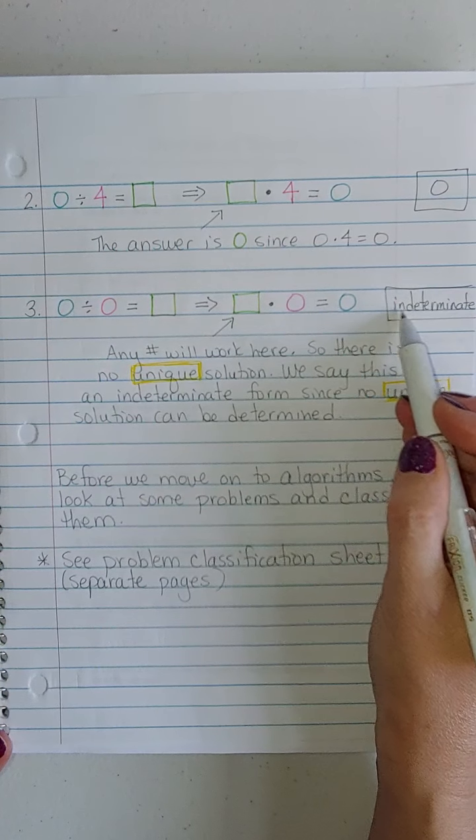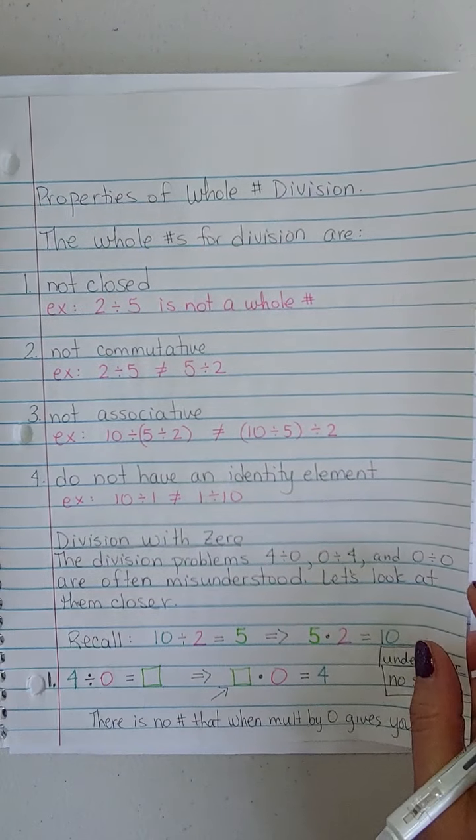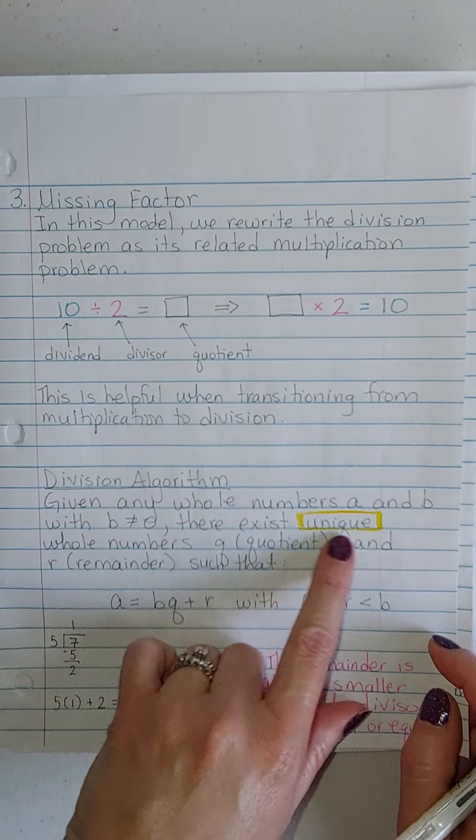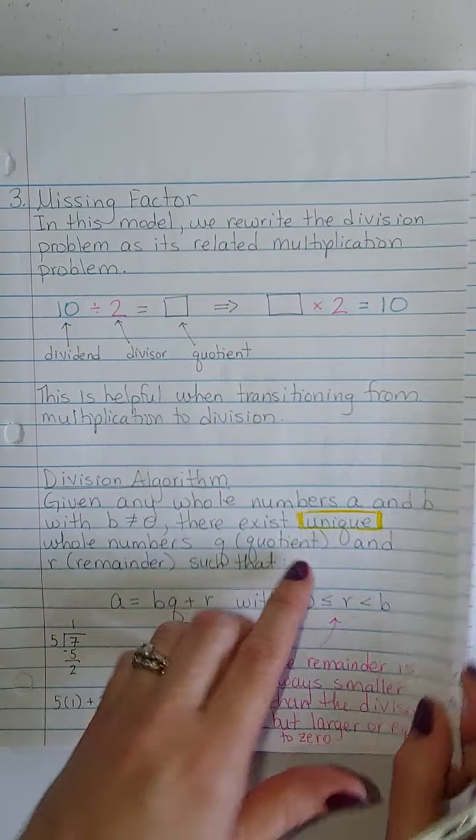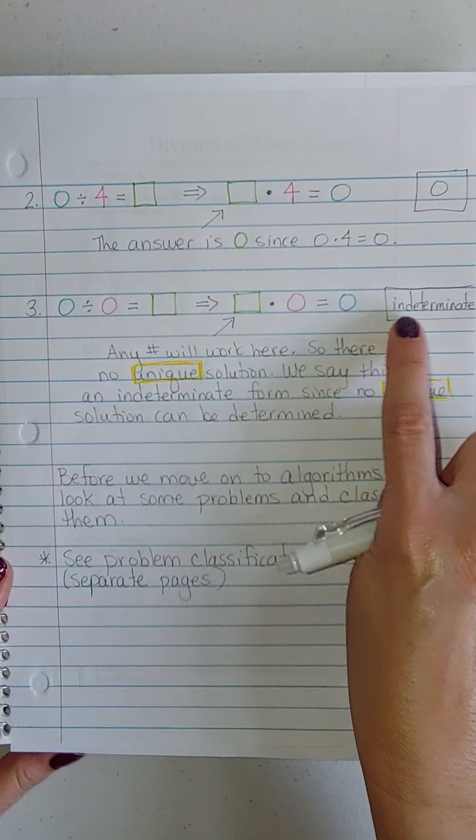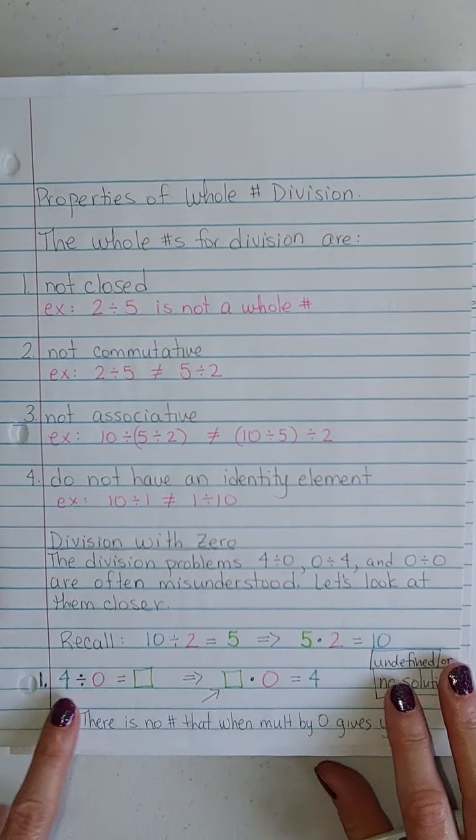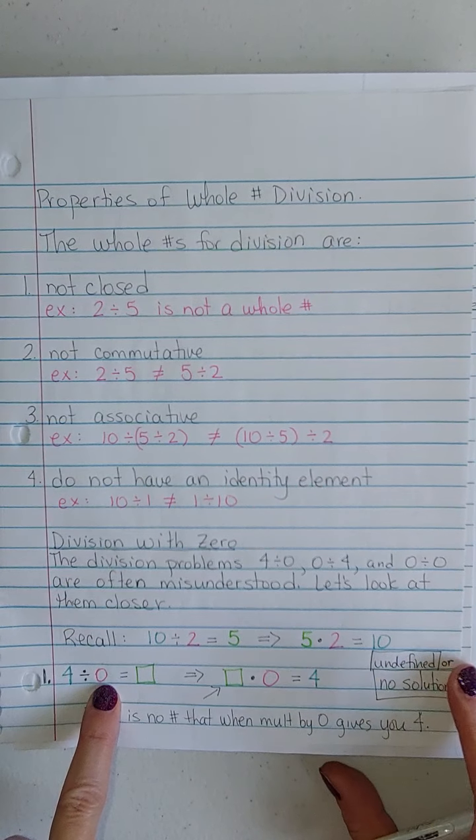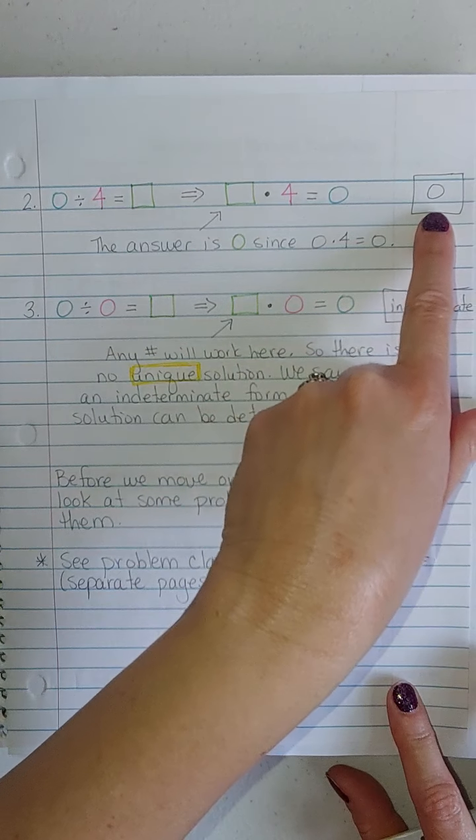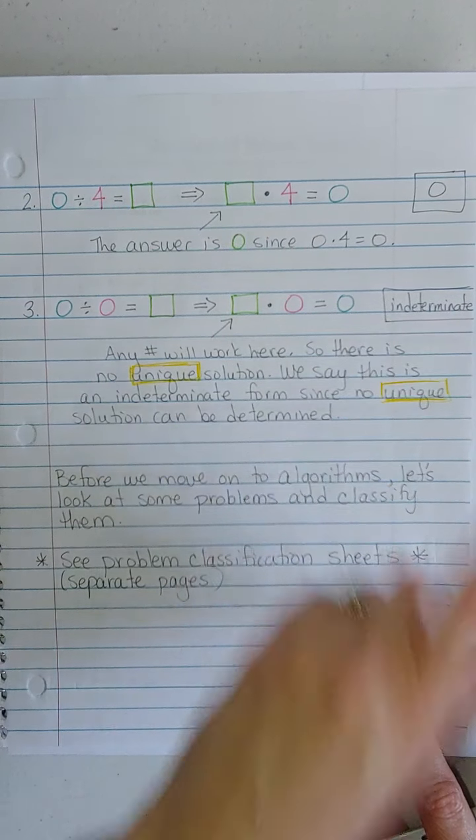Notice how I highlighted the word unique. If we go back to that division algorithm, the division algorithm states that we have to get a unique answer for every division problem. Because there's no unique answer here, we say that a single answer cannot be determined for this. In general, some non-zero number divided by 0 is undefined. 0 divided by something non-zero is just going to be 0. And 0 divided by 0 is indeterminate. We cannot determine a single answer.